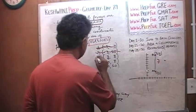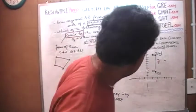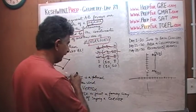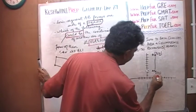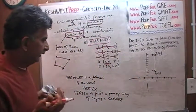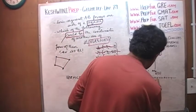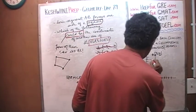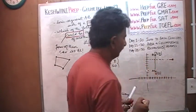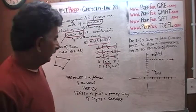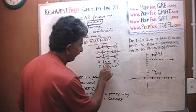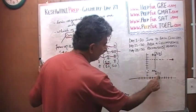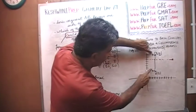How about D: (10, 8)? Ten looks hopeful because 10 minus 3 is 7, which matches the side length. But the y-coordinate ends at 8, and 8 minus 3 is only 5 — not 7. That doesn't work.